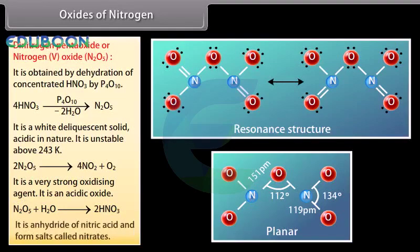N2O5 is an acidic oxide; it is the anhydride of nitric acid and forms salts called nitrates.